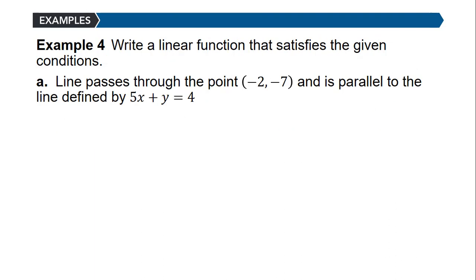In Example 4, we apply what we've learned about parallel and perpendicular lines to write a linear function satisfying given conditions, also using the point-slope form from the first objective. Recall the point-slope form: y minus y₁ equals m times (x minus x₁). The key is that we need a slope and a point to write the equation of a line.